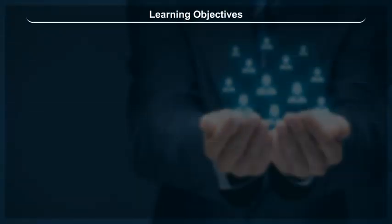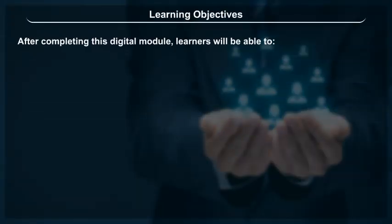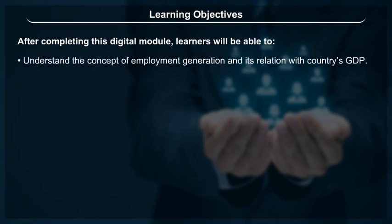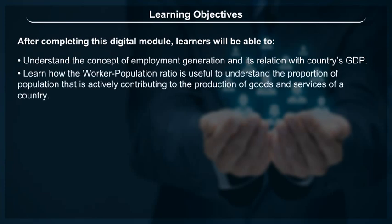Learning Objectives: After completing this digital module, learners will be able to understand the concept of employment generation and its relation with a country's GDP. They will also learn how the worker population ratio is useful to understand the proportion of population that is actively contributing to the production of goods and services of a country.